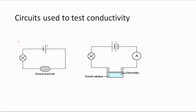This is a simple circuit that can be used to test the conductivity of a material. In this first circuit, we have a cell and a bulb. This is where we put the material we want to test. If we wanted to see if graphite is a conductor, we take a piece of graphite, put it in the circuit, and if it conducts electricity, the bulb will light.